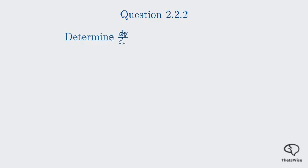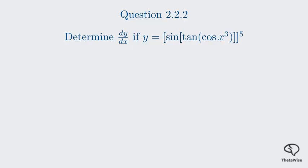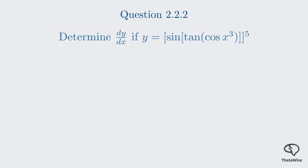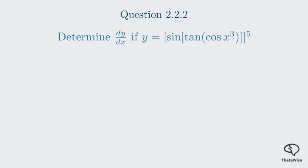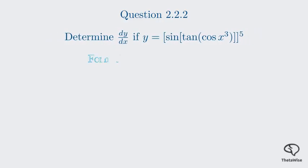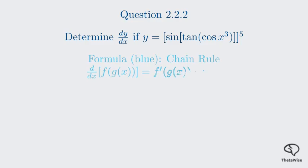Moving on to Question 2.22. We are asked to find the derivative of y equals the quantity sine of tangent of cosine of x cubed, all raised to the power of 5. This is a classic example of a nested function, which means we will need to use the chain rule multiple times. The chain rule tells us to differentiate from the outside in, starting with the outermost function, which is the power of 5.